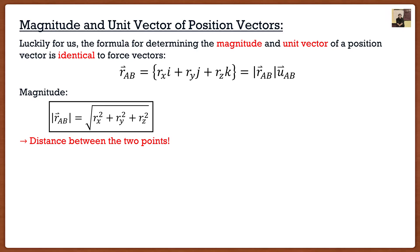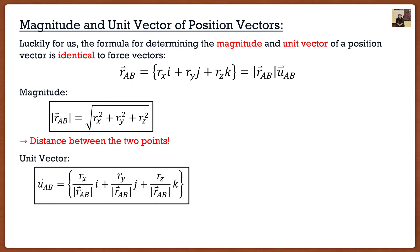This is important for exams because professors love to use words. Instead of showing you something, they'll say 'the distance between point B and point C is 6 meters.' If you know that the magnitude of a position vector equals the distance, you'll recognize that 6 meters is the magnitude of the position vector from B to C. The unit vector is found the same way as before — divide each component by the magnitude.